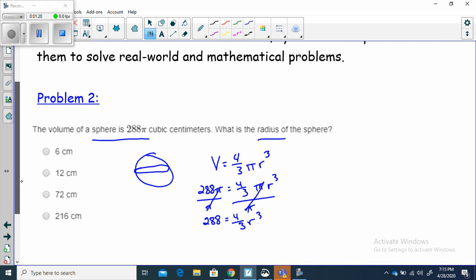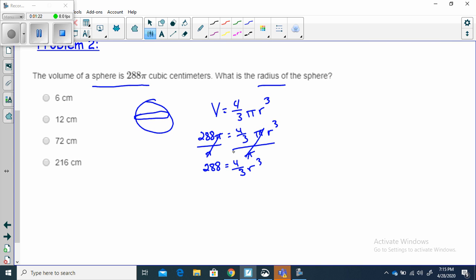And I need to get the r³ by itself so I can solve for r. When I multiply by a fraction, the opposite of multiplying by a fraction is to multiply by its reciprocal. In this case, that would be 3/4. Now, what I do to one side, I do to the other.